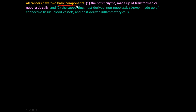All cancer has two basic components, and it's important to understand this terminology. The parenchyma is made up of the transformed or neoplastic cells — it's the functional unit of the neoplasm. Each cell type dictates its function: if it's a liver cell, it performs liver functions; if it's a kidney cell, it performs kidney functions; if it's a nervous system cell, it does that job.